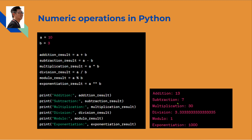10 minus 3 equals 7 for the subtraction result. Multiplication result: A multiplied by B. Division result: A divided by B gives 3.333... — Python computes division and prints the division result. Modulo uses the percentage sign: A modulo B gives the remainder. Exponentiation result: A to the power of B is printed out.